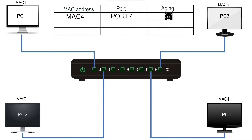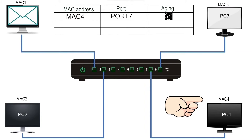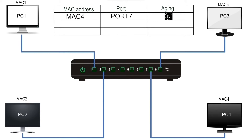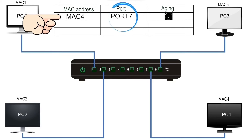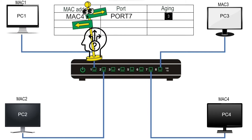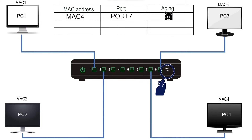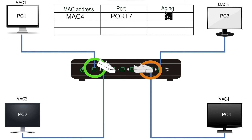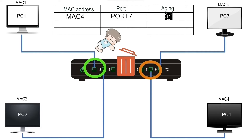For example, PC1 generates a unicast frame for PC4, whose MAC address is MAC4. The frame reaches the switch on port 1. The switch checks the CAM table and finds an entry for MAC4 on port 7, so it decides to forward the frame from port 7. After making the forwarding decision, the switch checks the VLAN configuration. If the destination port's VLAN ID matches the source port's VLAN ID, it forwards the frame; otherwise it discards it.